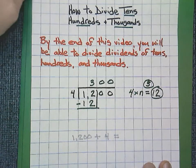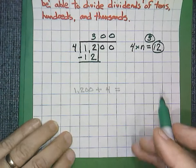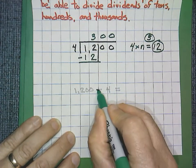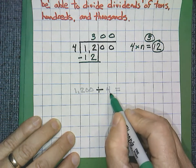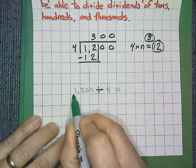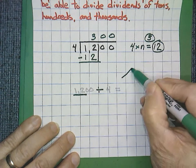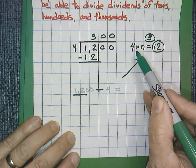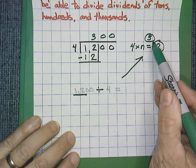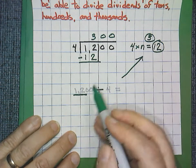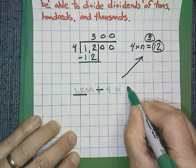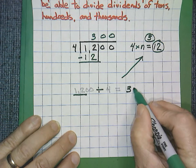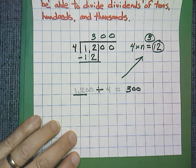We could also express the same problem — 1,200 divided by 4 — in a shorter way. If I take my 12, using the same steps: 4 times 3 equals 12, so it would be 3. Count my zeros: 1, 2. And write my zeros: 1, 2.